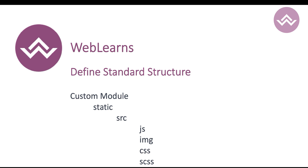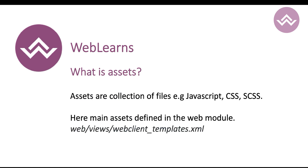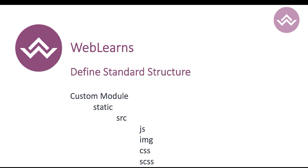This is the simple standard structure to define JavaScript files. Under a custom module, you create a static folder. Inside the static folder you define the JS files, images, CSS or SCSS, and XML template data. So the structure has folders: js, img, css, scss, and xml to define different types of files.